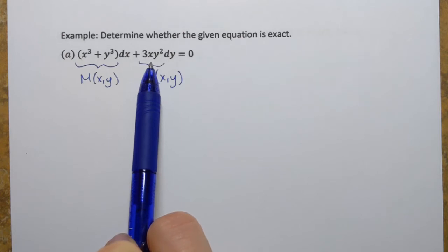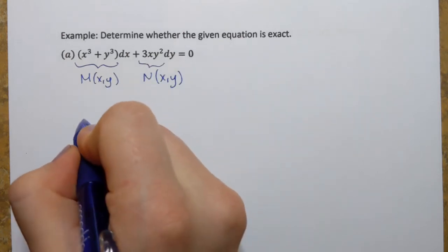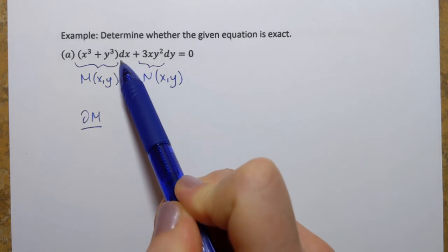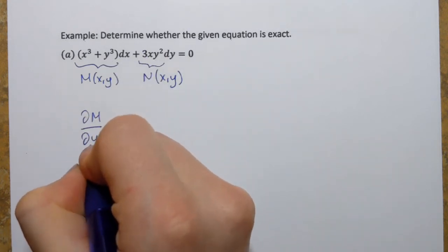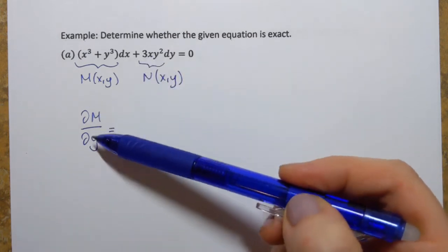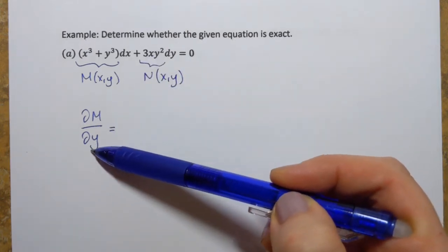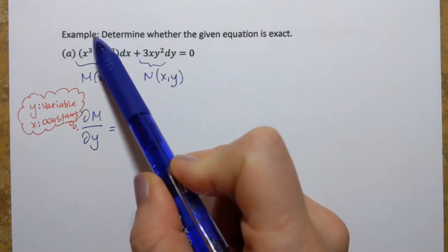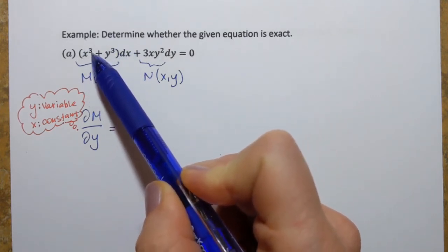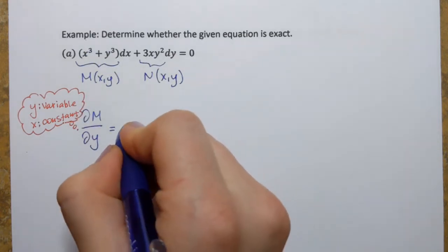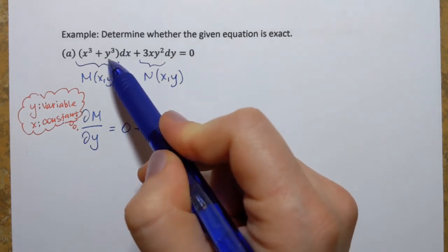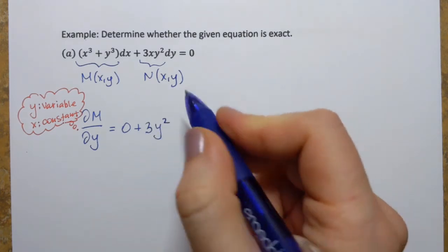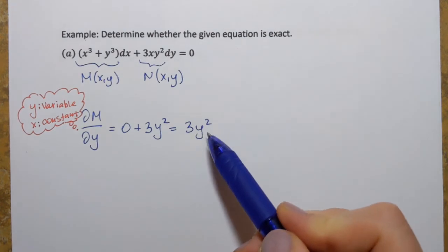Using the theorem, we can check that. I have to find the partial derivative of the function M, but with respect to y — remember, it should be the opposite variable. That means we treat y as the variable and x as the constant. So looking at this expression: x cubed — x is the constant, so derivative is 0 — plus y cubed, where y is the variable. Applying the power rule, that gives 3y squared.